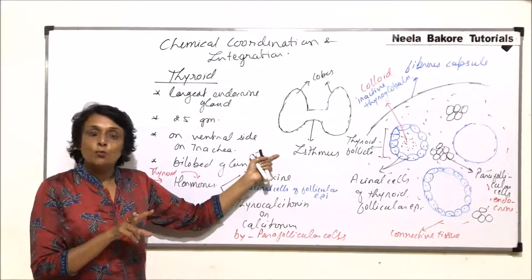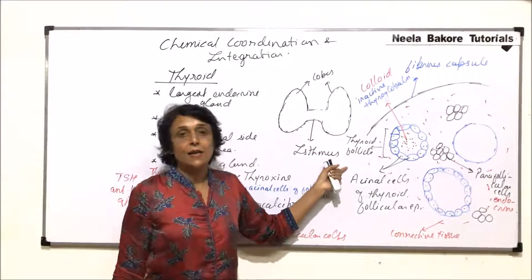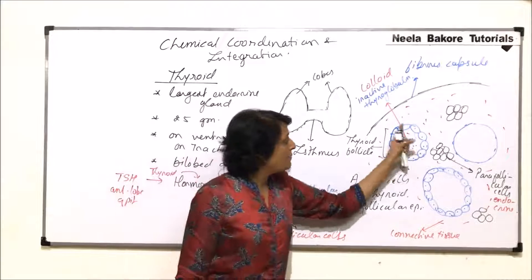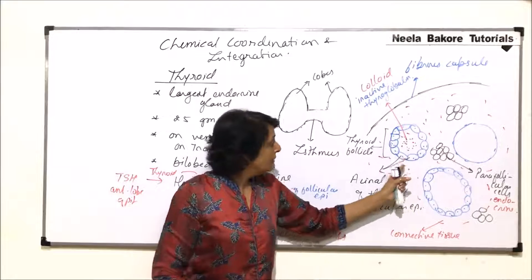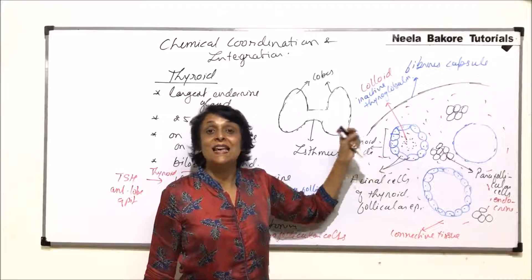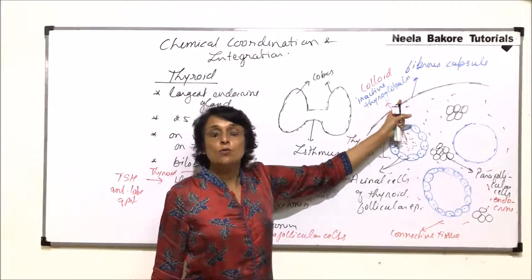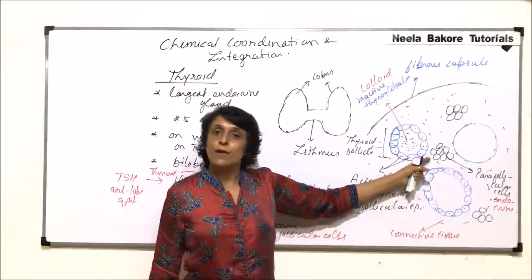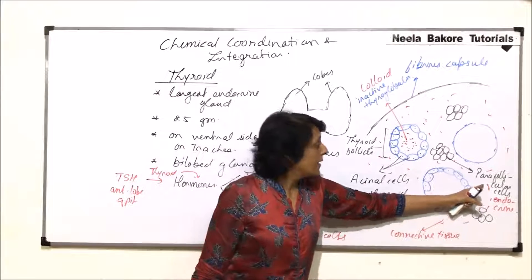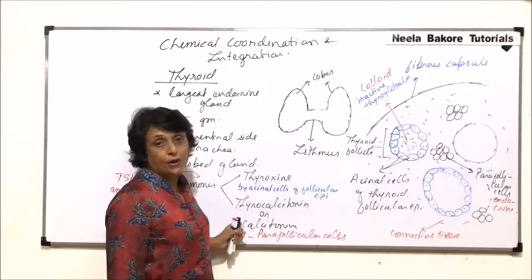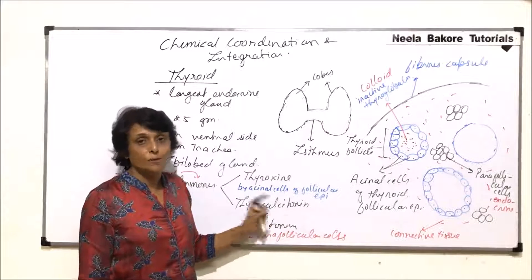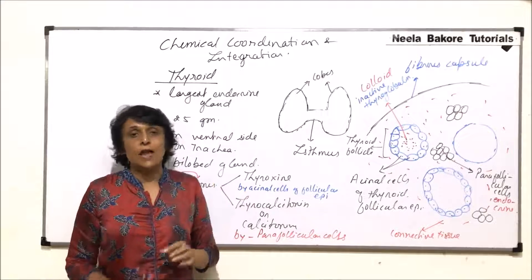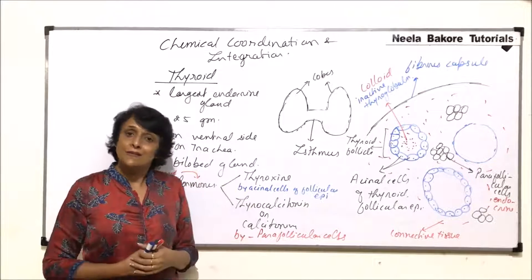To summarize: externally, it is a bilobed gland connected by a transverse isthmus. Internally, there are follicles in connective tissue; each follicle is lined by follicular epithelium whose acinar cells secrete the hormone in inactive form as thyroglobulin. In between the follicles in the connective tissue are parafollicular cells, which secrete thyrocalcitonin. We will now take up these hormones, their individual functions, and what happens in hypo and hyper states, starting with thyroxine first.